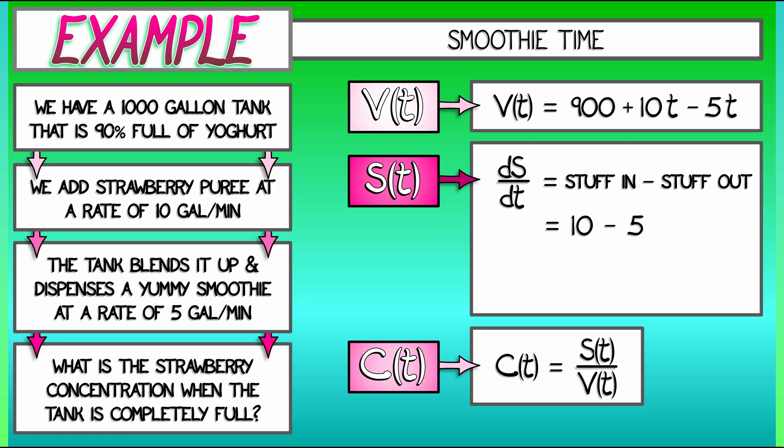So what we're removing in terms of the amount of strawberry stuff is 5 times C concentration. That concentration is S over V. We know what V is, so we can write down dS/dt as 10 minus quantity 5S divided by 900 plus 5t.